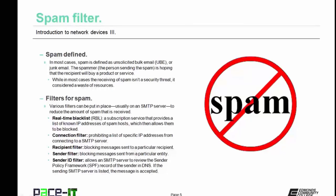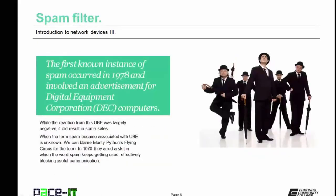There are also recipient filters — blocking messages sent to a particular recipient or end user. There are also sender filters — blocking messages sent from a particular entity. And finally, there is the sender ID filter. This allows an SMTP server to review the sender policy framework, or SPF record, of the sender in DNS. If the sending SMTP server is listed, the message is accepted and not counted as spam. The first known instance of spam occurred in 1978 and involved an advertisement for Digital Equipment Corporation computers.